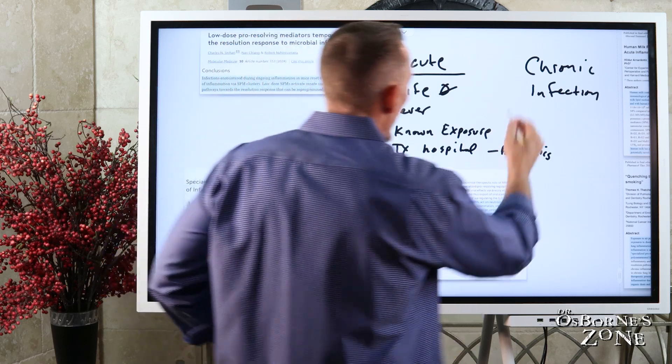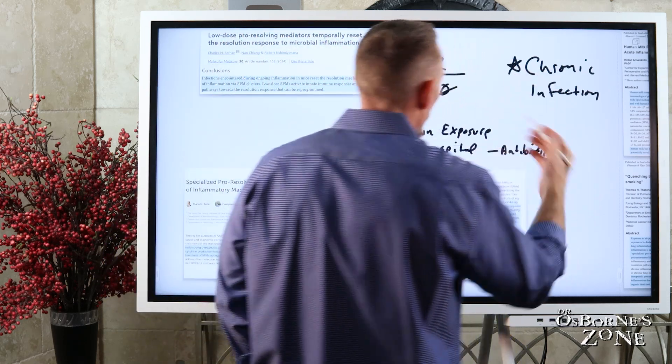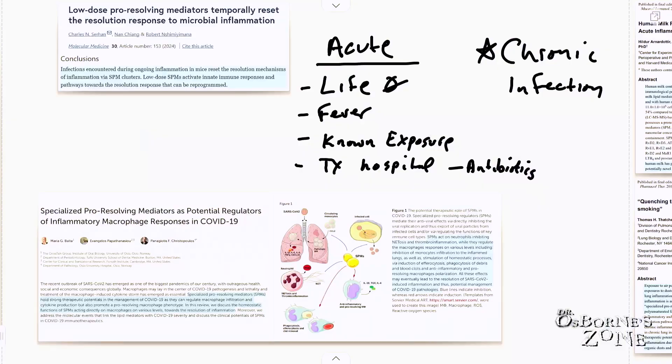But then you have this chronic piece. An example of chronic would be something like Lyme, like an internal Lyme infection. Other examples of chronic, and really probably infection's not the best word, really probably the better word would be imbalance, chronic microbial. The term is dysbiosis or imbalance.